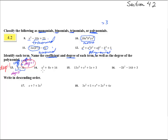Let's try number 14. Here we have three terms: x squared, 8x, and 16. So we have coefficients 1, 8, and 16 — those are just the numbers. The degree of x squared is 2, the degree of 8x is 1, and the degree of 16 is 0. So the degree of the entire polynomial is 2 — this is a second degree polynomial.